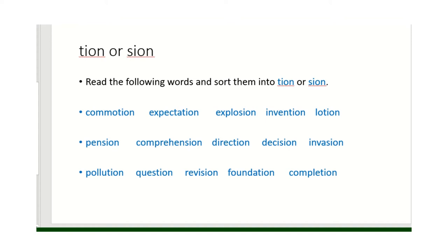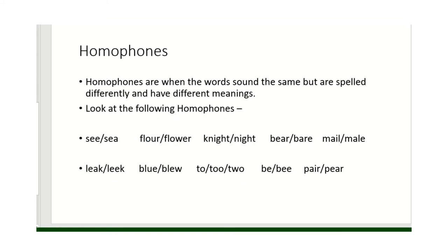Now then, read the following words and sort them into either whether it's -tion or -sion. Read them and sort those words into the correct group.